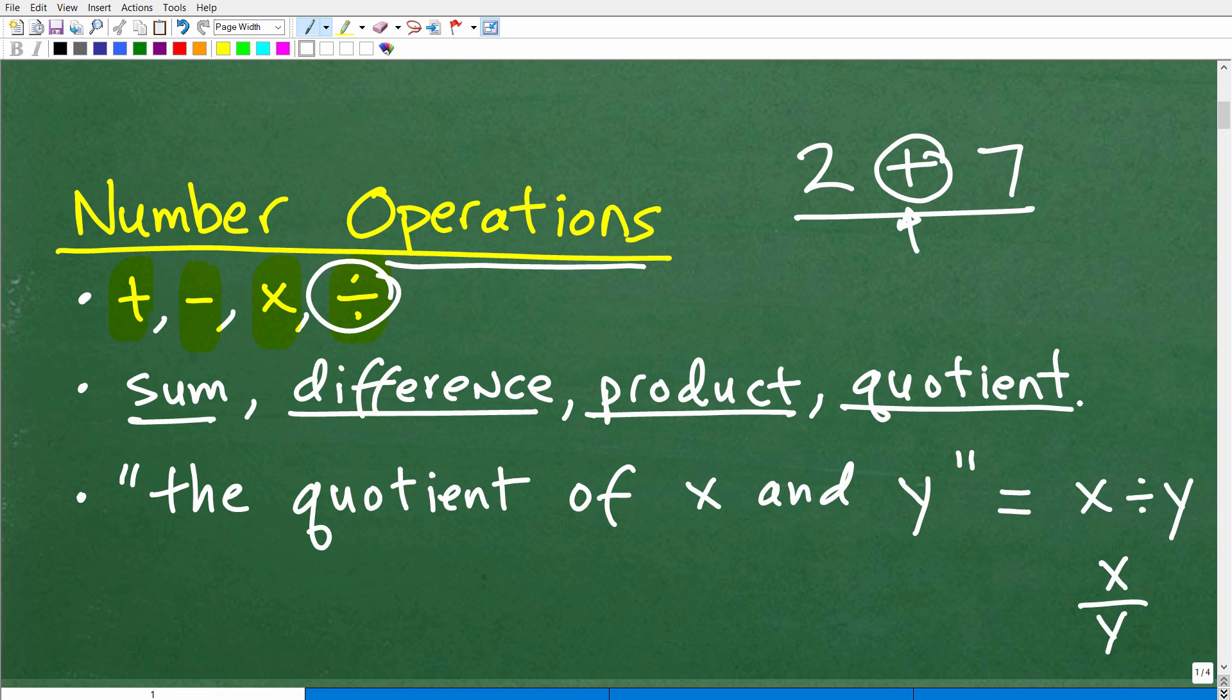Okay. So let's go ahead and actually define what the quotient is now. So the quotient of x and y, some number x and another number y, is equal to x divided by y. Okay. And you can write that this way, x divided by y. And there you go.